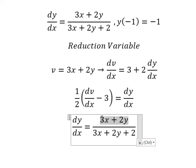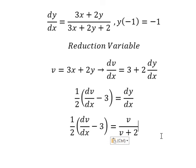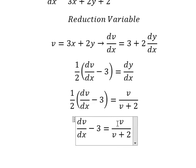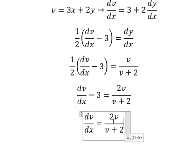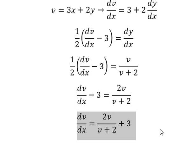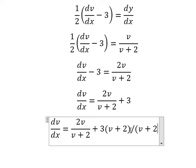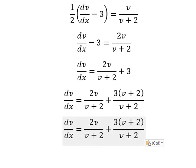This one we change by V, this one we change by V, and DY over DX we change by this one. Now we multiply both sides by number two, then we put negative number three to the right. Now we do a common denominator, so we have three multiplied by V and number two.